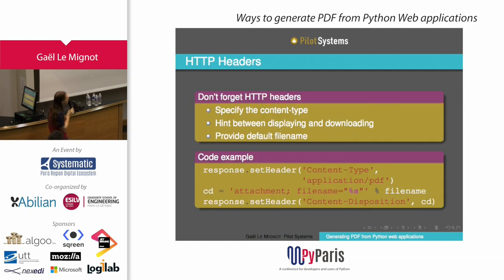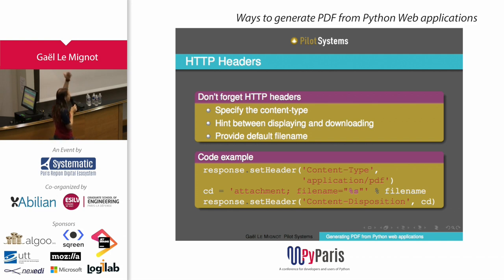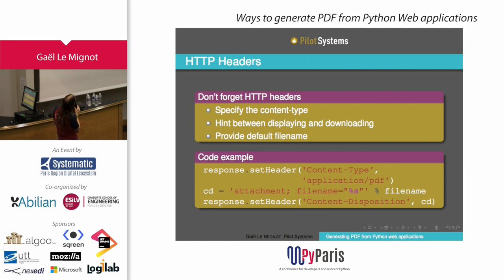Now a few tips and tricks. The first is: don't forget to send the proper HTTP headers when you return a PDF instead of HTML. You can hint whether you want the PDF displayed inside the browser or downloaded. Be careful though — it's only a hint, and browsers can choose to disrespect it, or depending on the browser it may not be able to display it inline. You can also provide a default filename that will be offered to the user when they download.